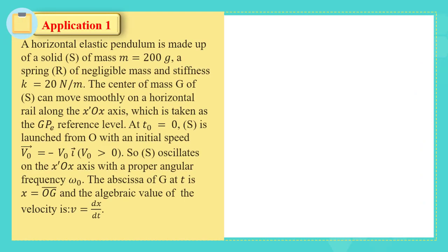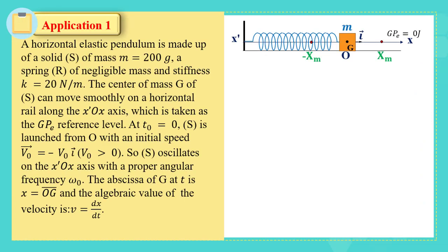The question says: a horizontal elastic pendulum is made up of a solid of mass m equals 200 grams, which is 0.2 kilograms, and a spring of negligible mass and stiffness k equals 20 newtons per meter. The center of mass of S can move smoothly on a horizontal rail along the x-axis, which is taken as the gravitational potential energy reference level.